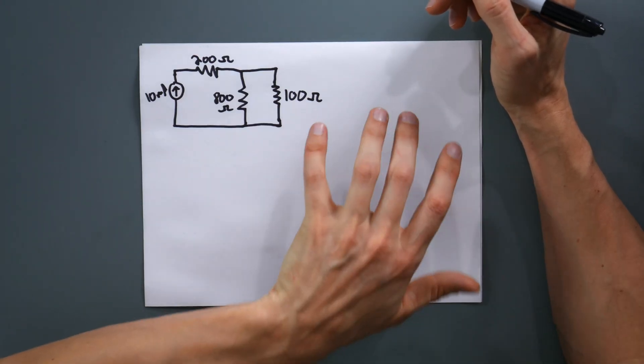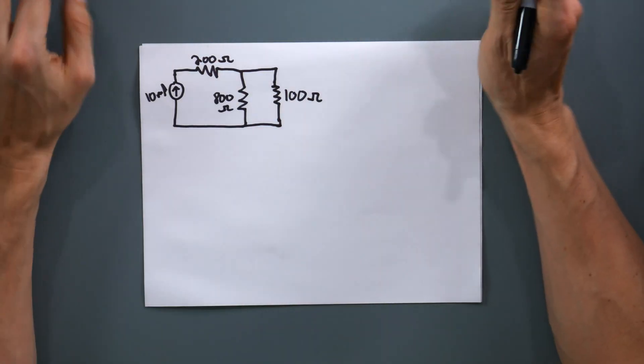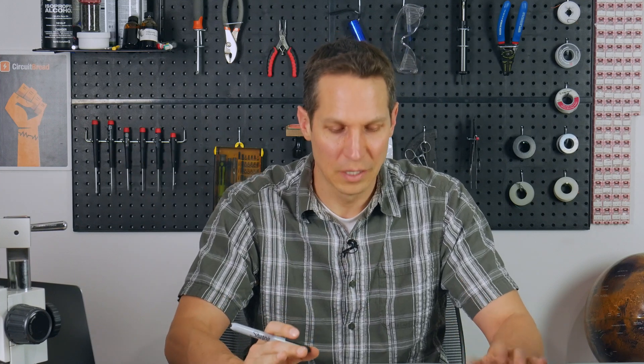Let's jump right into our first example, where we'll take a fairly simple circuit and go through these steps a little bit slower. Before we just flew through the steps — now let's actually apply them.